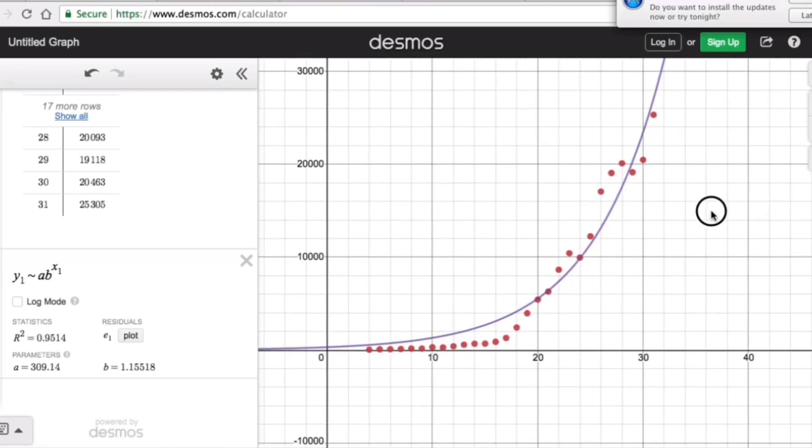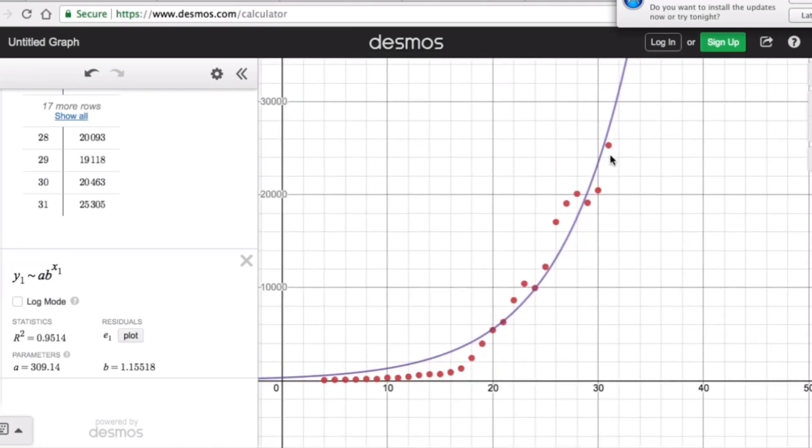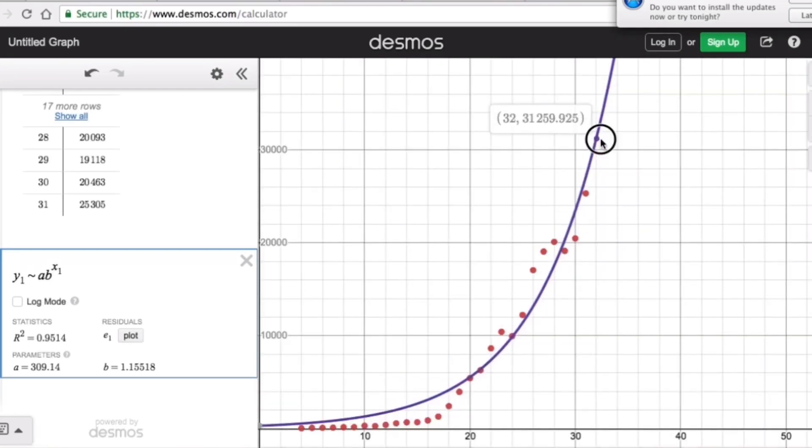So then we go ahead and determine the cases for April 1st. So please remember that this is the case for 31st. So that's March 31st. So that means April 1st would actually be 32. So we go ahead and trace the graph on 32. So we go ahead all the way to 32. So on April 1st, there's 31,260 cases because we can round that off. So 32 represents April 1st because March 31st was down below.